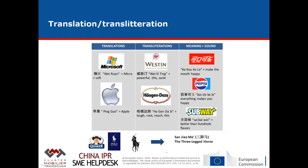You have to give the same importance to the Chinese transliteration of your brand as you would your actual brand, because it's how it will be called in China. If your name has a proper translation — for example, Apple — it's been given the name of apple in Chinese. Most often for foreign companies we pick transliteration, which reproduces the sound in Chinese of your Western brand. For example, Adidas is called something which means 'laugh, root, reach' — it has no meaning, but each character has a positive meaning in Chinese culture. This is very important.